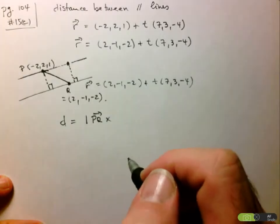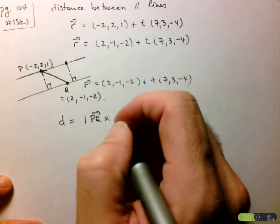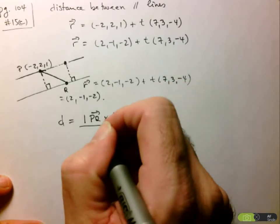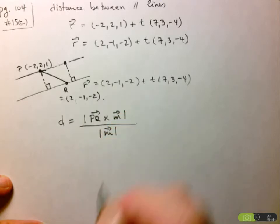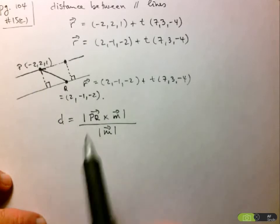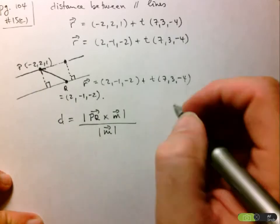Well, it's the same in either one, but cross product with the direction vector and then divided by the magnitude of the direction vector. So this is the formula we found and we see that we can apply it equally well for this problem of two parallel lines.